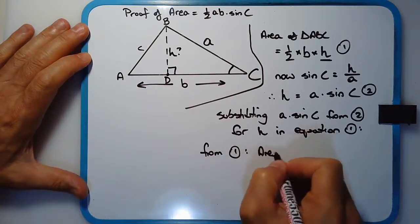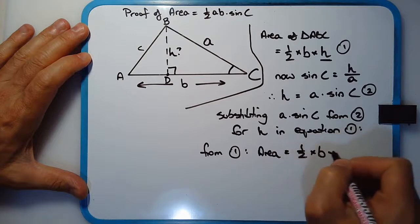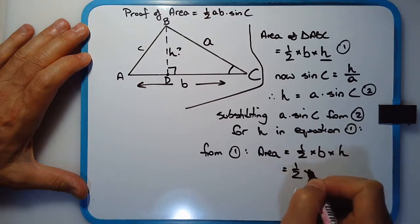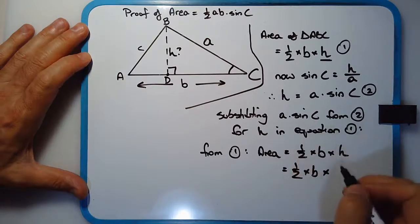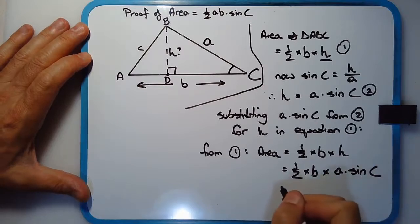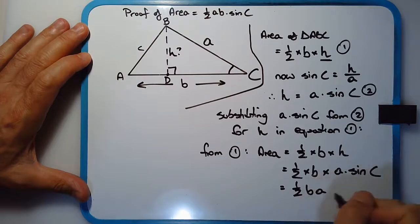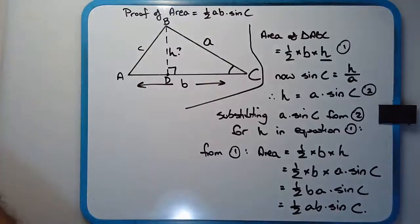Area is equal to half times base times height, which is equal to half times base times, now instead of H, we're going to substitute A sine C. A times sine of C, which is equal to half B A times sine C, which equals half A B sine C as required.